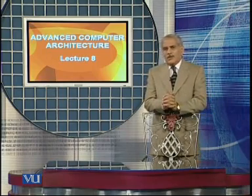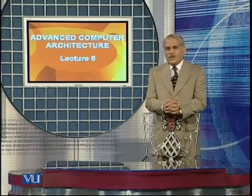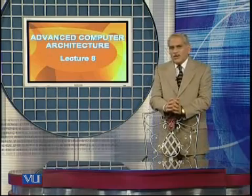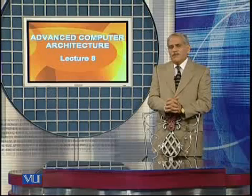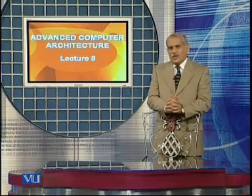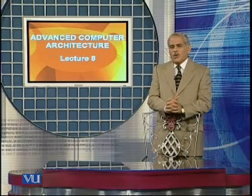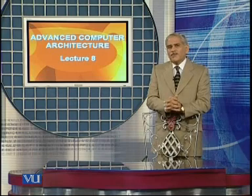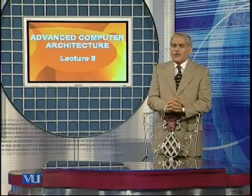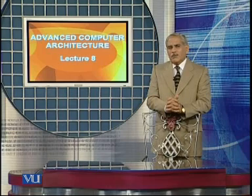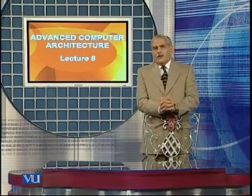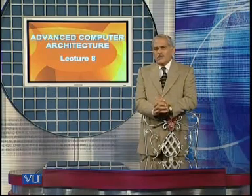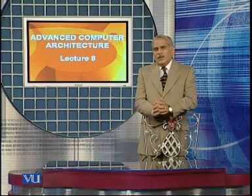We observed that the data path performs its operations in two phases known as the fetch phase and the execute phase. During the fetch phase, a number of micro-operations are performed whereby the instruction is read from the instruction memory and made available in the memory buffer register. The program counter is incremented to point to the next instruction in sequence, and the contents of the memory buffer register — which is the instruction code — is transferred into the instruction register. In the execution phase, a number of small steps are taken, and at the first stage, the instruction in the instruction register is decoded.